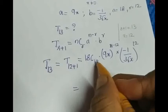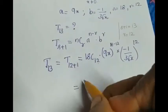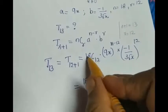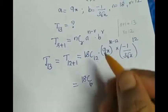That is equal to 18C12. Instead of taking 18C12, we can take the value 18C6. From where I got 6? 18 minus 12 gives you the value 6. That's the property of combination.